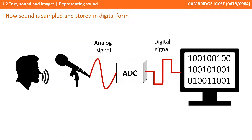We can visualise sound as an analogue wave, and to store the sound in binary we need to convert what is an analogue signal into a digital binary one. This process is called analogue to digital conversion.